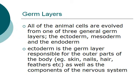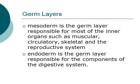The ectoderm is the germ layer responsible for the outer parts of the body — for example, skin, nails, hair, and feathers — as well as the components of the nervous system. The mesoderm is the germ layer responsible for most of the inner organs, such as the muscular, circulatory, skeletal, and reproductive systems. Last but not least, the endoderm is the germ layer responsible for the components of the digestive system.